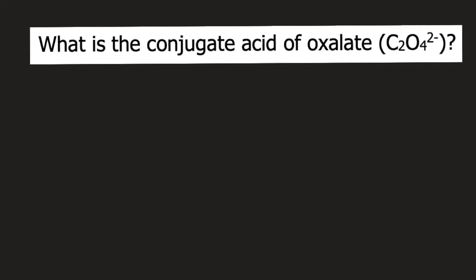What is the conjugate acid of oxalate C2O4 2-? If you want to determine the conjugate acid, what you need to do is add an H-plus to the ion or to the molecule. In our problem, the given ion is oxalate C2O4 2-.